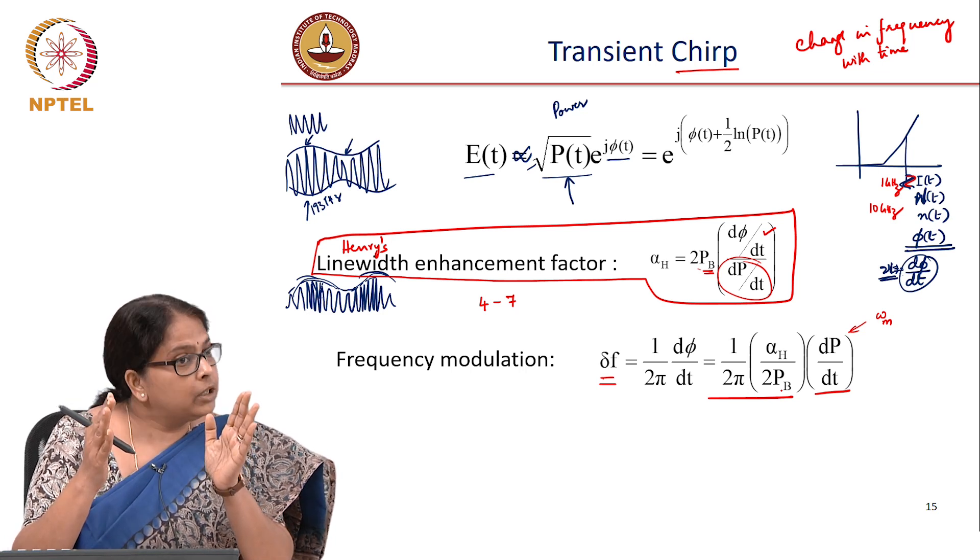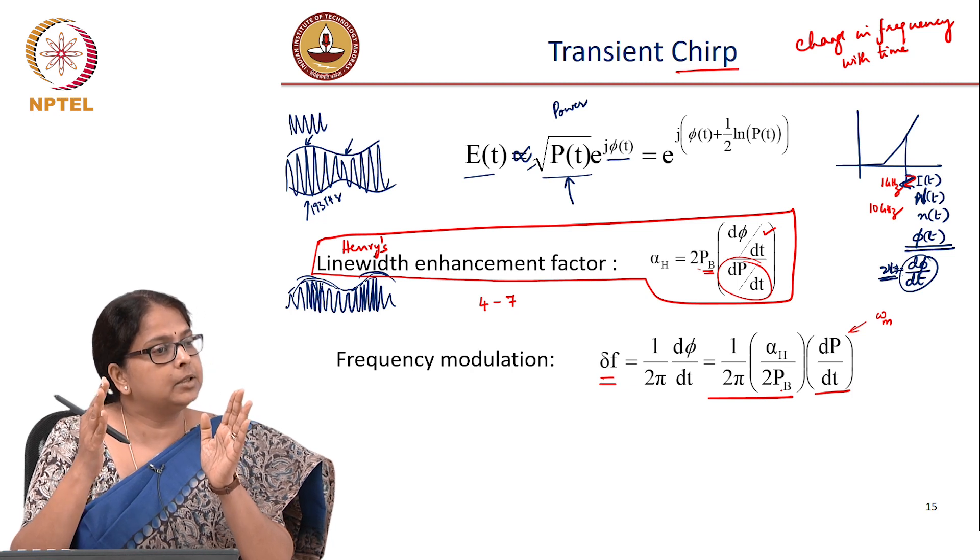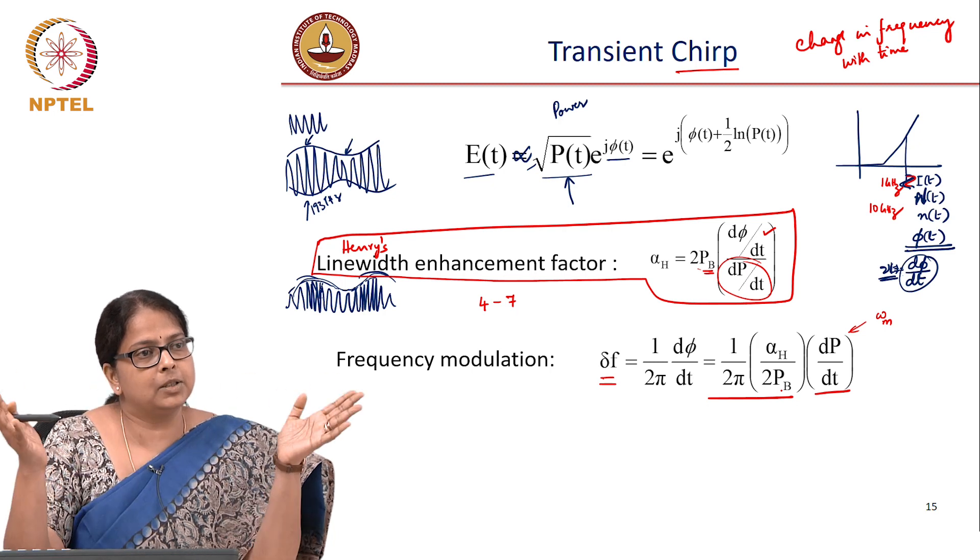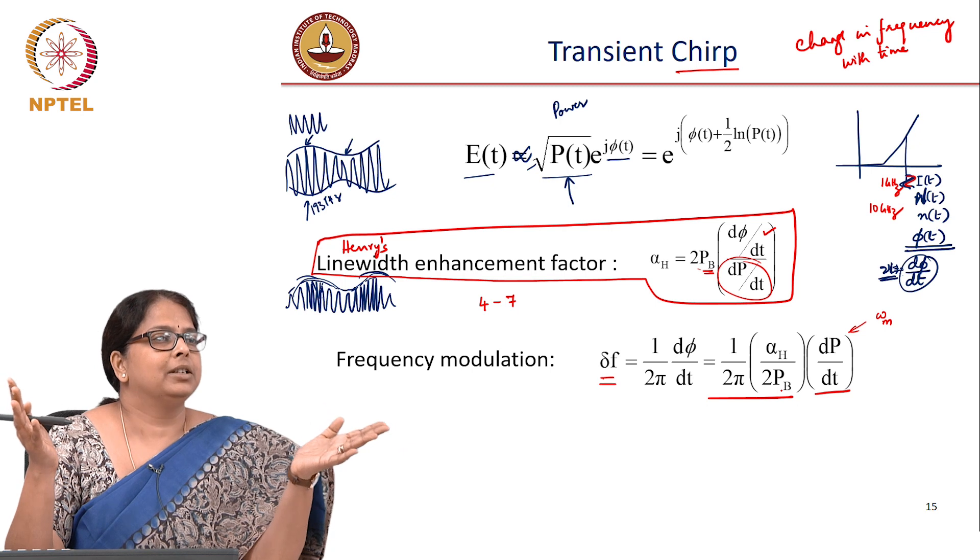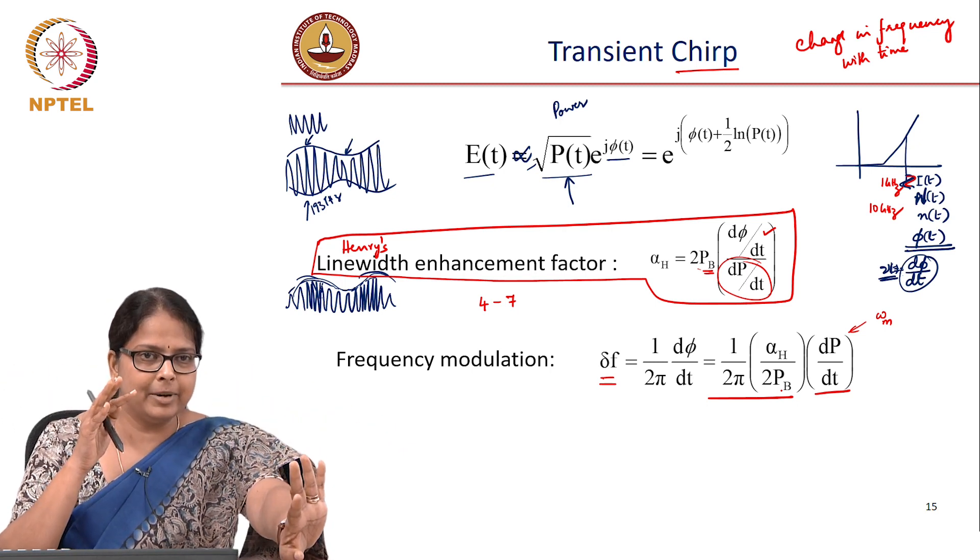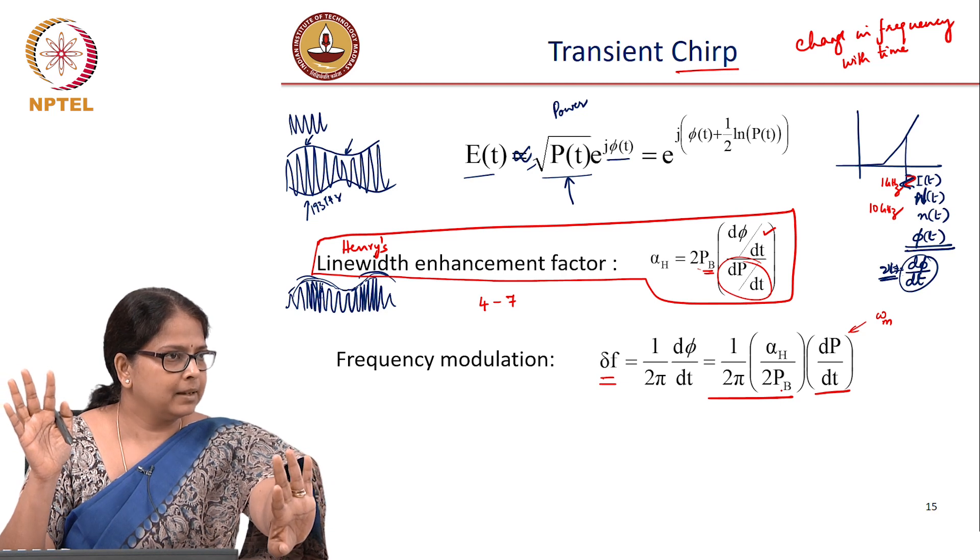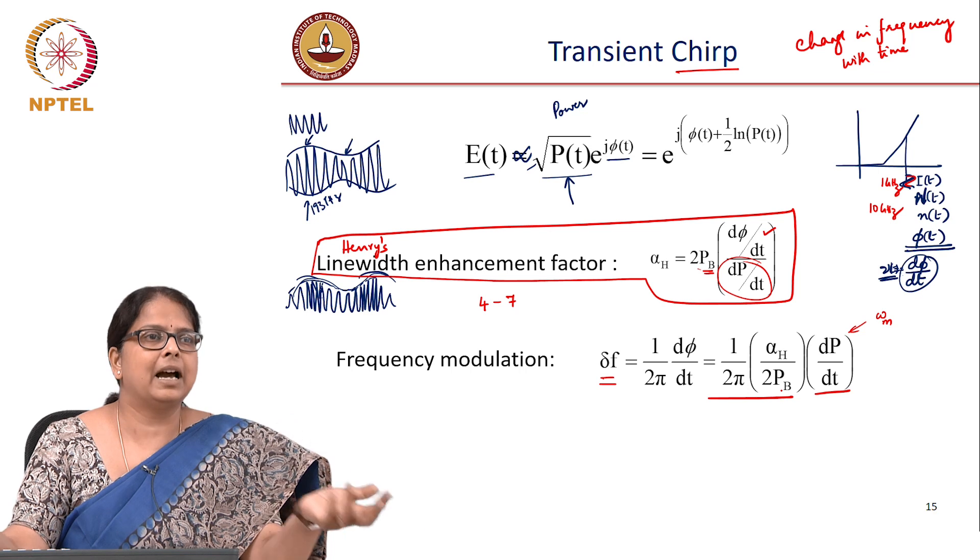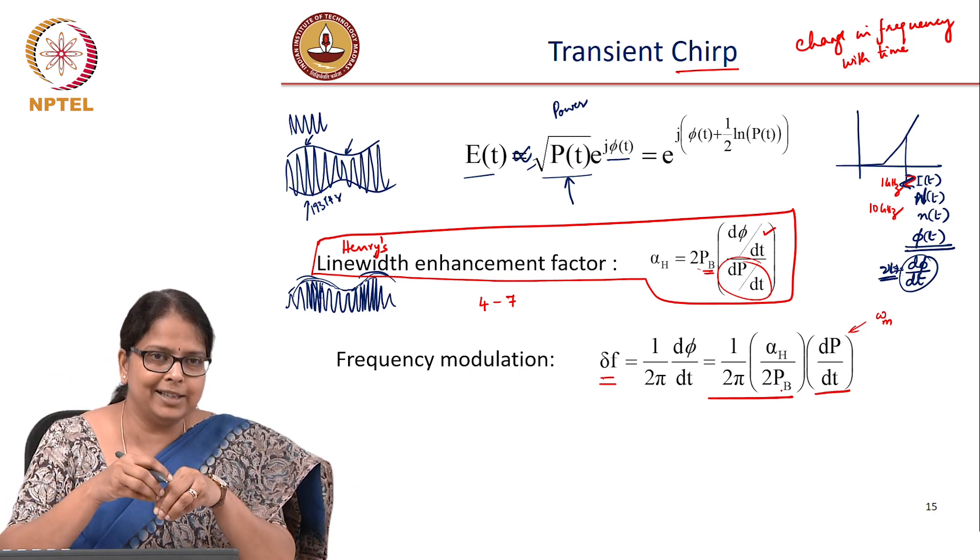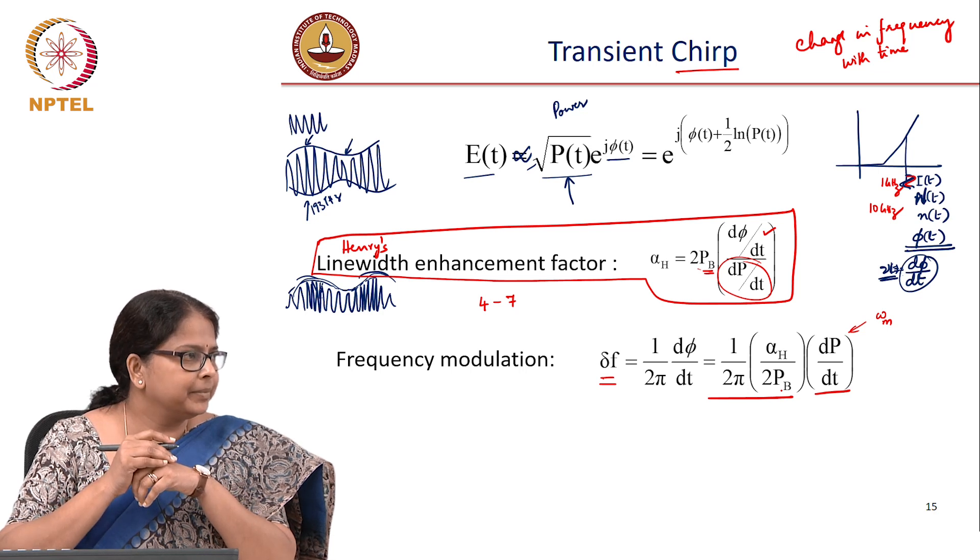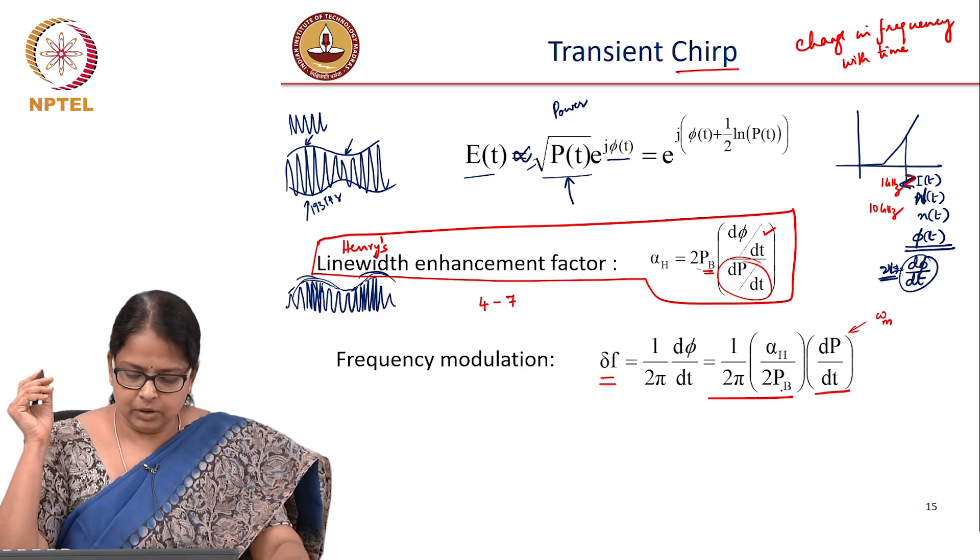What is the consequence of having a larger spectral spread? Why did we say LED is bad because its spectral spread is large? Dispersion. All the colors will now start propagating with different speeds in the fiber and that is a problem for us. So the dispersion induced effects will start reappearing even in a laser because of your transient chirp.